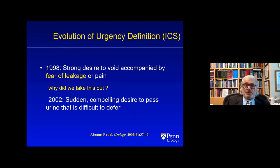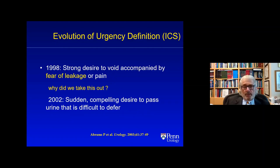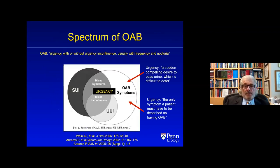What is urgency? Obviously if that's the primary term in the definition, you need a good definition of it. In 1998, urgency was defined by the ICS as 'a strong desire to void accompanied by a fear of leakage or pain.' It was redefined when the OAB definition was formulated as 'a sudden compelling desire to pass urine that is difficult to defer.' Why did we take fear of leakage out? We shouldn't have — I think we should have left it in. No committee is perfect, and we proved that.